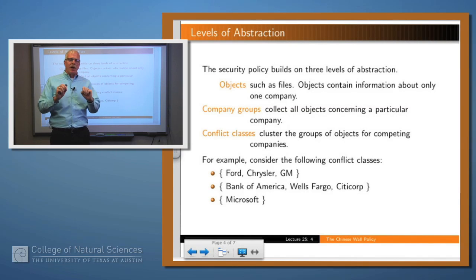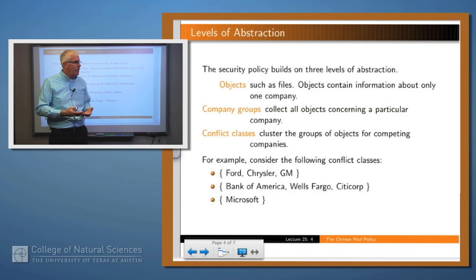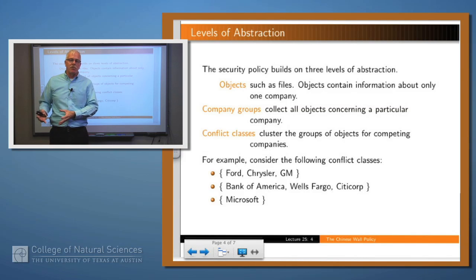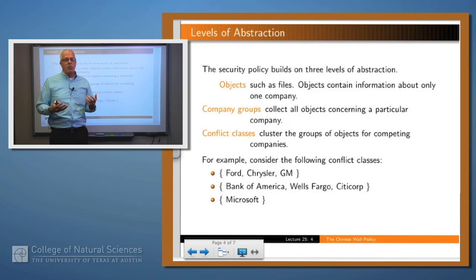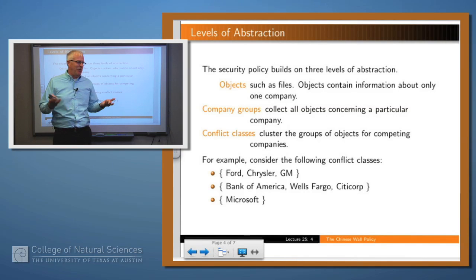So how does it work? The way they model this was, you can imagine three levels of entities or objects within the system. You have the standard objects — files and things like that — that the lawyer or consultant or whoever might have access to. You have a set of company groups, so for example, all the files associated with GM, Ford, and McDonald's. And then you have a set of conflict classes, which are sets of company names of companies that directly compete with one another. For example, Ford, Chrysler, and GM are in one conflict class because they're all car companies. Then Bank of America, Wells Fargo, and Citicorp — those are all banks. And then Microsoft, well, nobody competes with Microsoft.